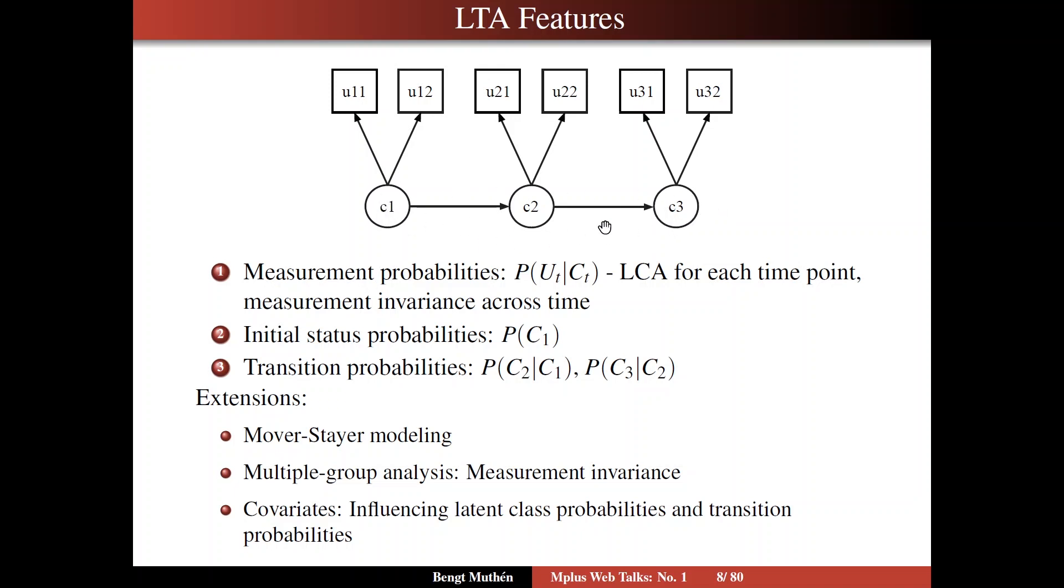For the latent part, or the structural part, as we say in structural equation modeling, you can break it up into initial status probabilities, probabilities for the first time point, and then transition probabilities, probabilities for C2 given C1, C3 given C2. So they look like this. And that's the model that's been used quite a lot.